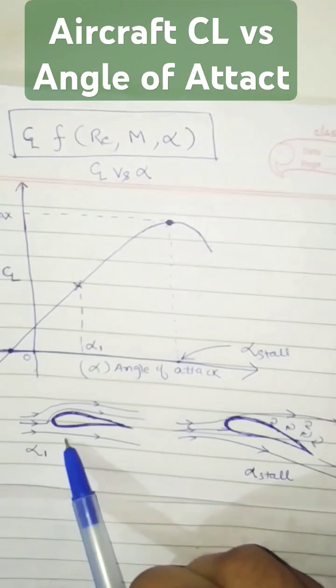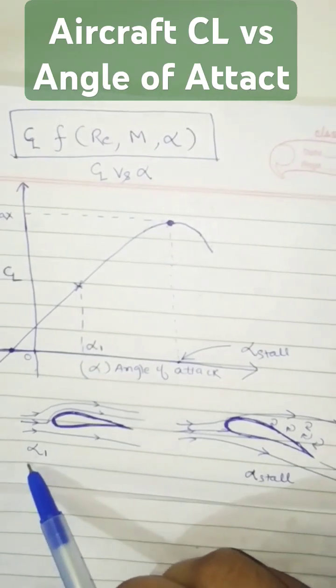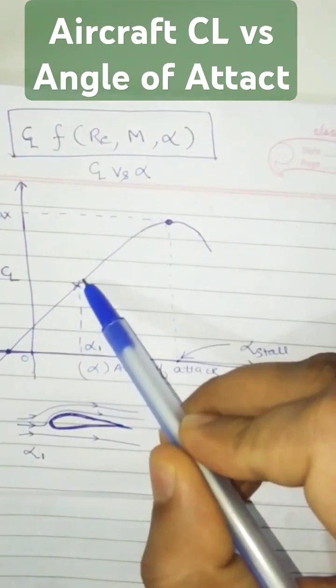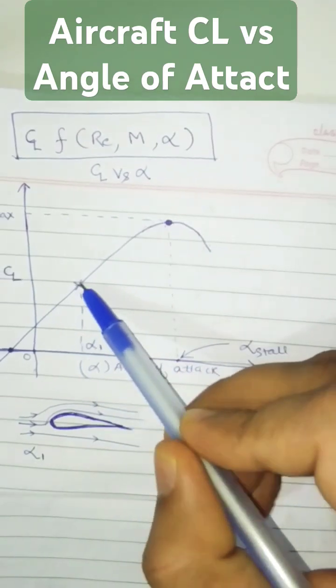For example, in this case, your angle of attack is alpha 1, which is a lower angle of attack. So you have a coefficient of lift corresponding to that.